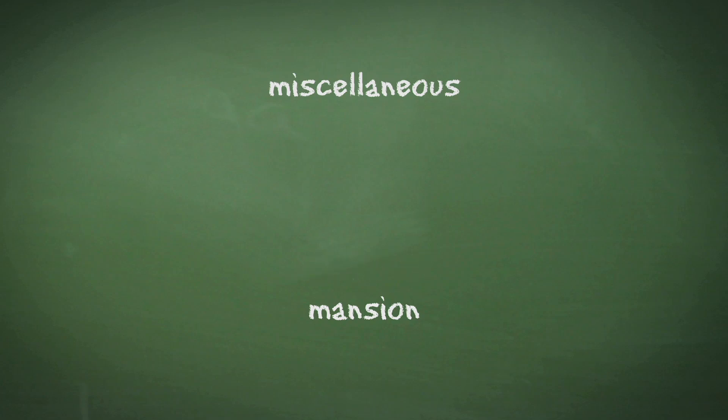Moving on to our last possible answer, mansion. Again we can see it contains two N's, so we need to take extra care. We tick off the M, A, N, S, I, O, and finally we come to the second N. Carefully looking at miscellaneous, we spot that the N only appears once, and therefore the word mansion cannot be made from the letters in miscellaneous. Mansion is therefore the correct answer.